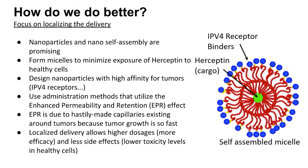We can place folate receptor binders on these micelles. Tumors have certain receptors that are well characterized by scientists, so we can design binders to these receptors. These micelles containing Herceptin will have a high affinity for the tumor region and will bind to it. If we can figure out how to deploy the cargo in the appropriate area once the micelles reach their target, we could achieve higher dosages of Herceptin for greater efficacy while also lowering side effects by not exposing healthy cells to toxic levels.